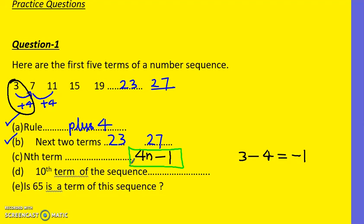For the 10th term of the sequence, simply replace n with 10: 4 times 10 minus 1 equals 40 minus 1, which is 39.